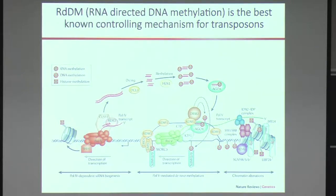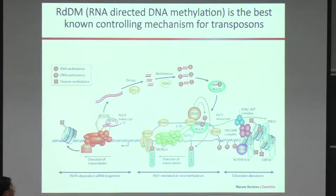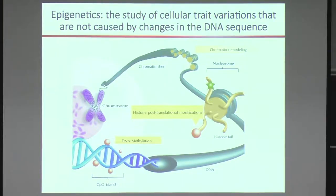Because transposons cause genome instability, plants and animals want to have them very strongly suppressed. This is one of the well-known mechanisms to suppress transposable elements, called RdDM. Components such as DCL3 will be talked about later. I was also talking about epigenetics — the study of cellular trait variation that comes with phenotypic change without DNA sequence change. Components known to affect epigenetic change include chromatin remodeling, histone modification, and DNA methylation.